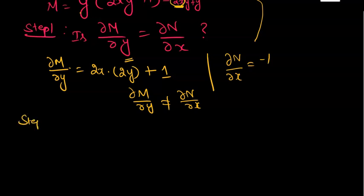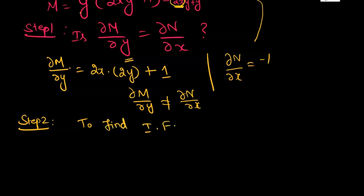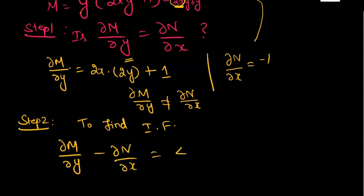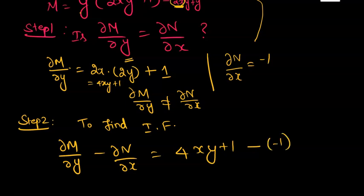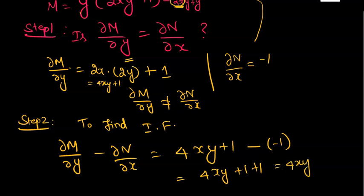Now we have to make it exact, so we need to find the integrating factor. To find the integrating factor, we compute the difference ∂M/∂y minus ∂N/∂x. That gives 4xy + 1 minus (minus 1), which simplifies to 4xy + 2.